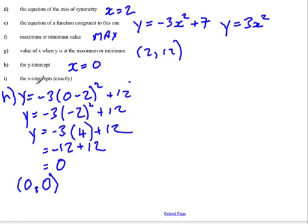And that's actually going to give us one of the answers in part i, because remember, if we're looking for the x-intercepts, that's where y is equal to 0. So we know that one of our answers has to be (0, 0), because that's what we found in h.